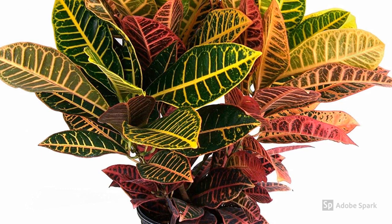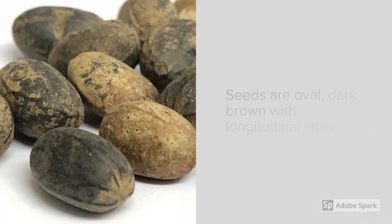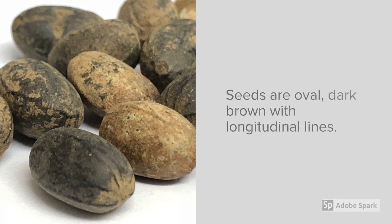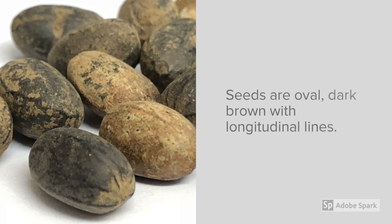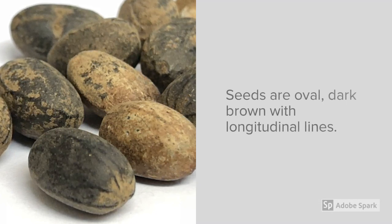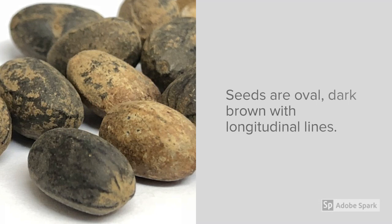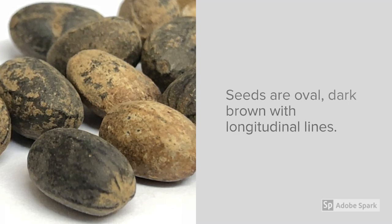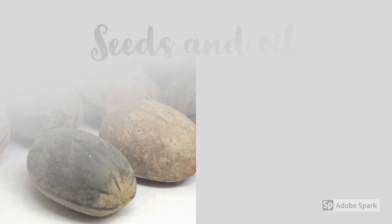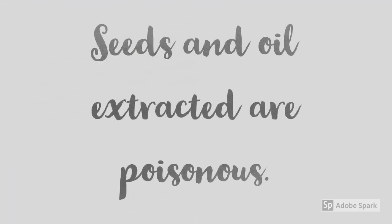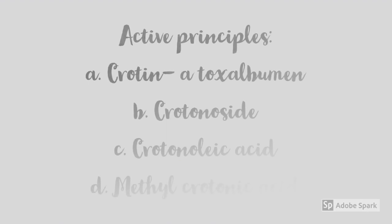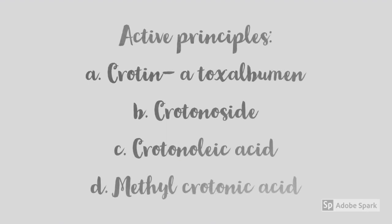These are the seeds of the Croton tiglium plant — oval and dark brown with longitudinal lines, not to be confused with seeds of Ricinus communis. If you are wondering whether the entire plant of Croton tiglium is poisonous, only the seeds and oil extracted from it are poisonous.